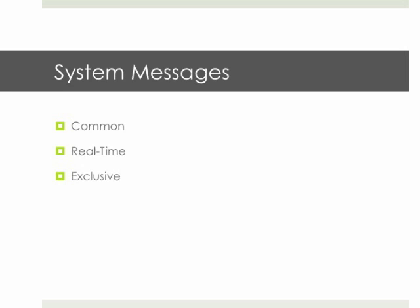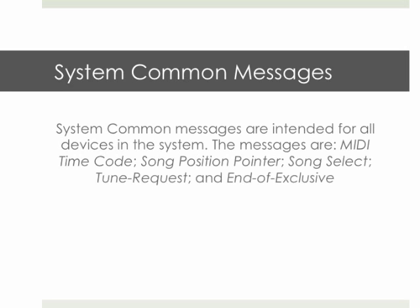System messages also have subcategories — three of them: common, real-time, and exclusive. We won't go into a lot of detail on those right now; we'll discuss them more later in the course. System common messages are intended for all devices in the system. Examples include MIDI timecode, which gives us information about position, the song position pointer, and song select — which song is playing in a sequencer, and where in the song we are, such as the second bar, third beat, and so on.